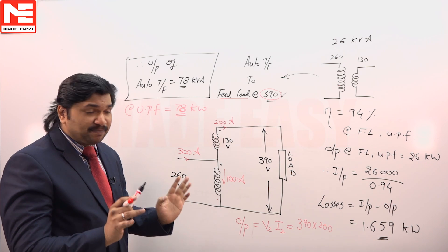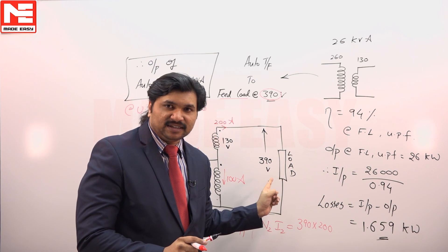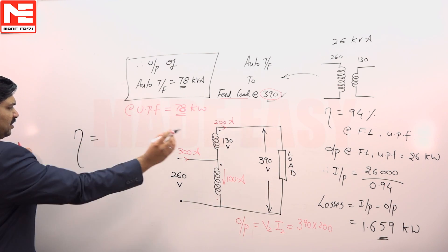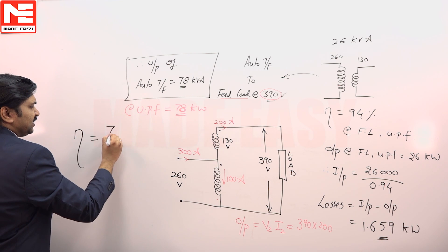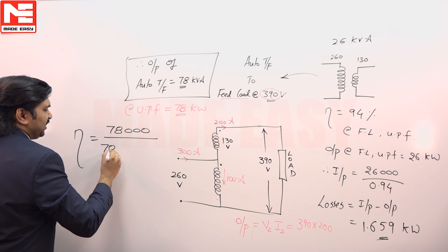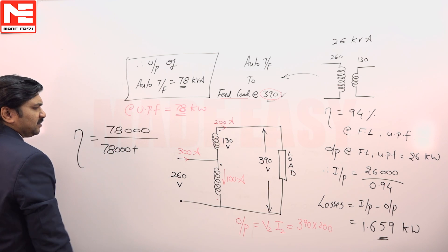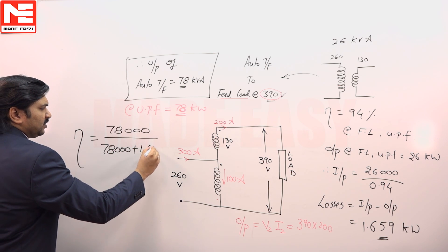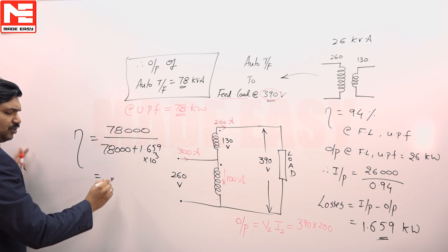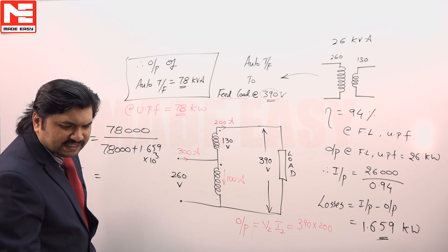Obviously the losses will be same in both cases. That is why efficiency of auto transformer is 78000 by 78000 plus 1.659 into 10 cube, so you are going to get an efficiency around 97.9 percent.